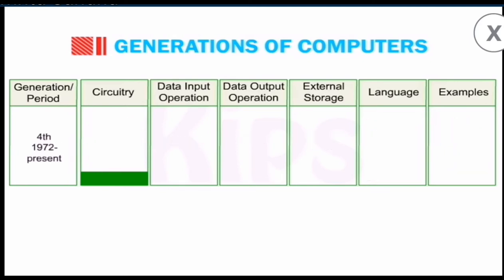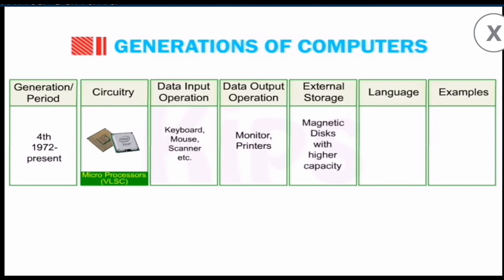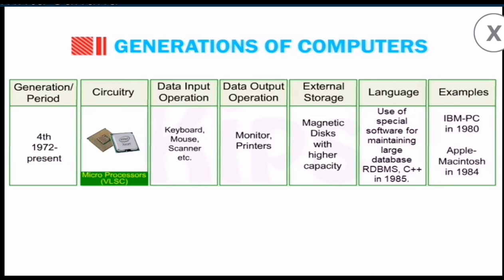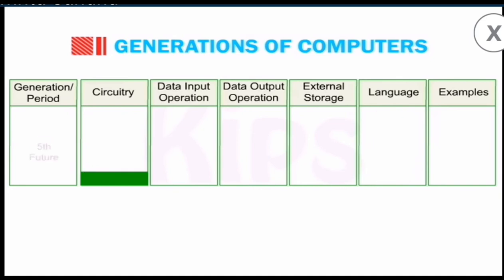Let's move to the fourth generation of computers, which is 1972 till present. We are using microprocessors, which are VLSI. Input methods have changed to keyboard, mouse, scanner, and microphone. Output displays on monitors and printers. Magnetic disks with higher capacity. We use many languages nowadays: RDBMS, C++, etc. Examples are IBM PC and Apple Mac 1984.